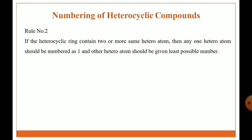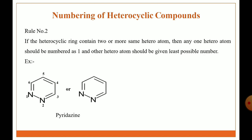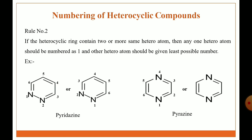Rule 2: if the heterocyclic ring contains two or more of the same heteroatom, then any one heteroatom should be numbered as one and the other heteroatom should be given the least possible number. This is a six-member heterocyclic ring which contains two nitrogen heteroatoms. The first number is given to any one heteroatom and the other heteroatom is given the least possible number. A second example is a six-member heterocyclic ring containing two nitrogen heteroatoms, named pyridine, where the same rule applies.